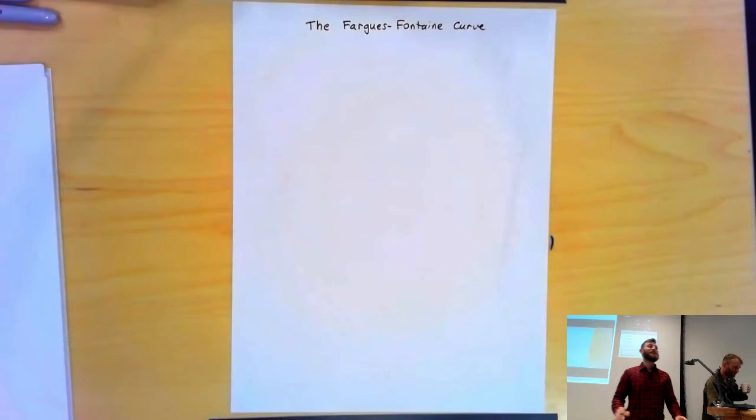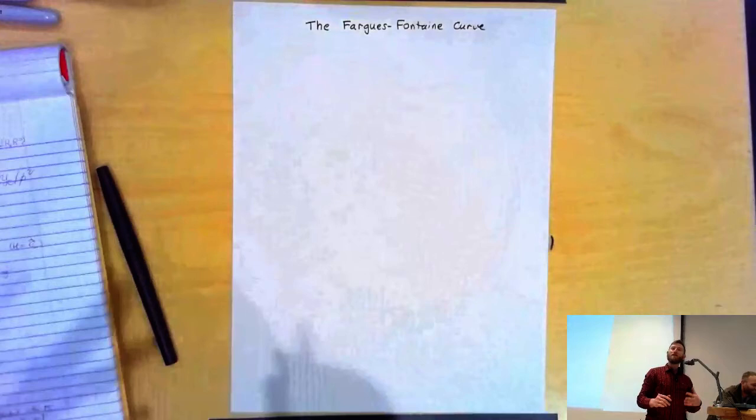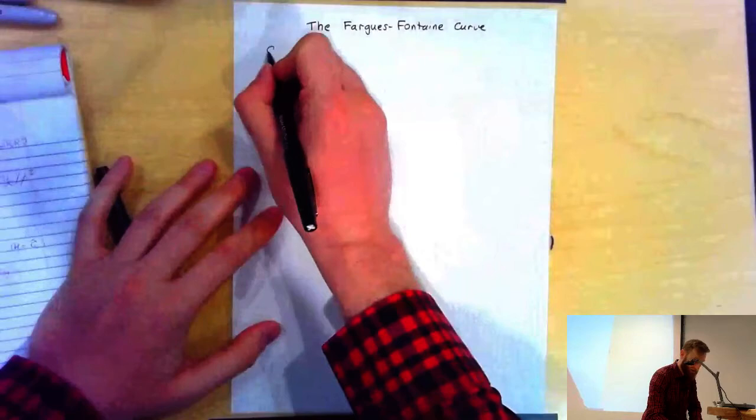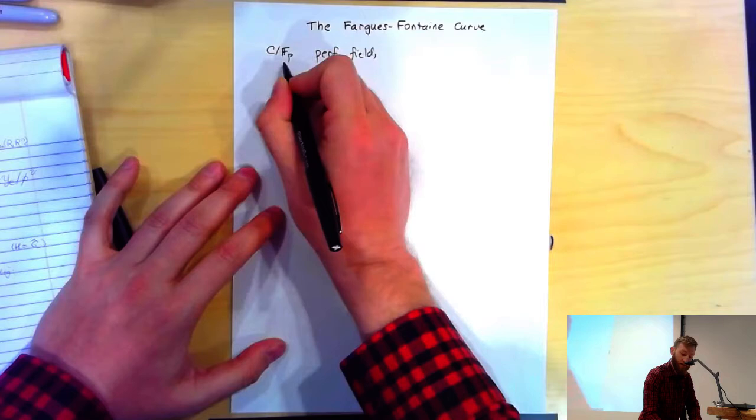I want to pick up where I was talking last time. From last time, we were interested in providing a moduli space of untilts of a perfectoid space in characteristic P. So let's start with the case of a field — that is the absolute case.